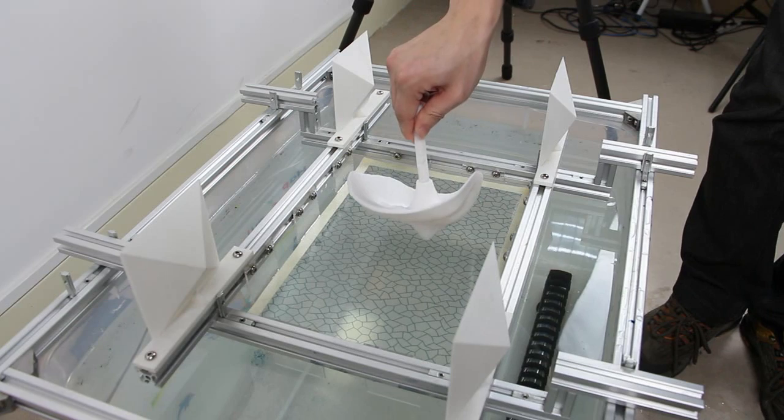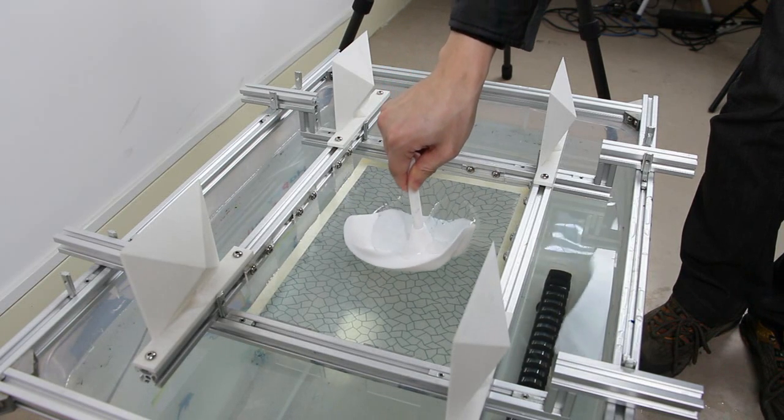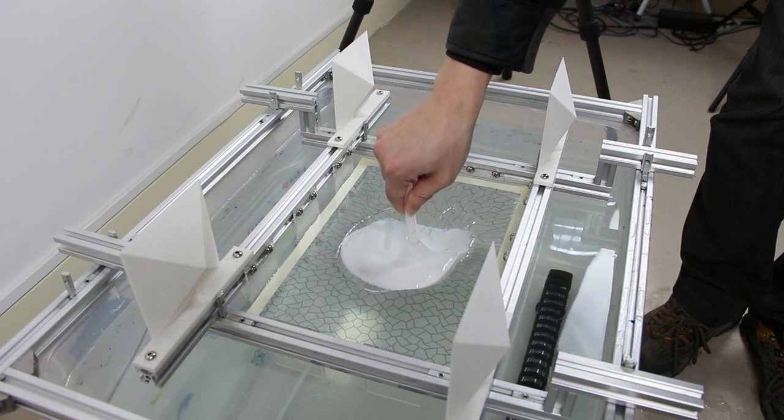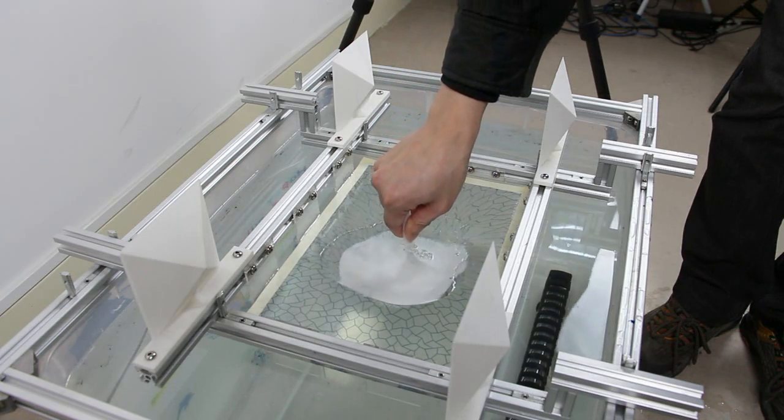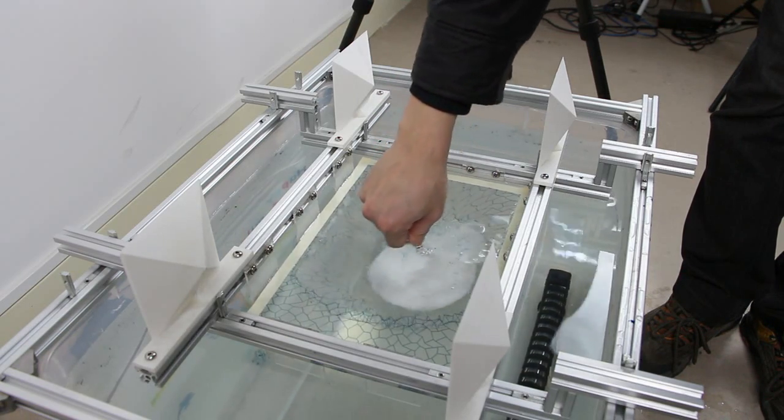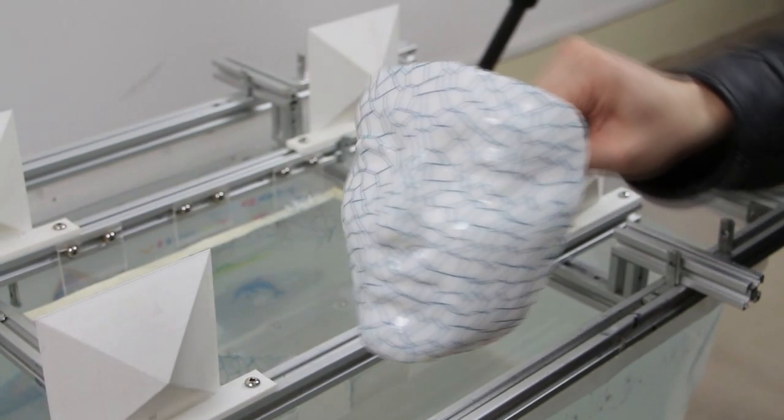A physical object is slowly dipped into the water through the floating film. Once touching the object, the film gets stretched, wraps the object surface, and adheres there. Throughout, the coloring printed on the PVA film gets transferred to the surface.